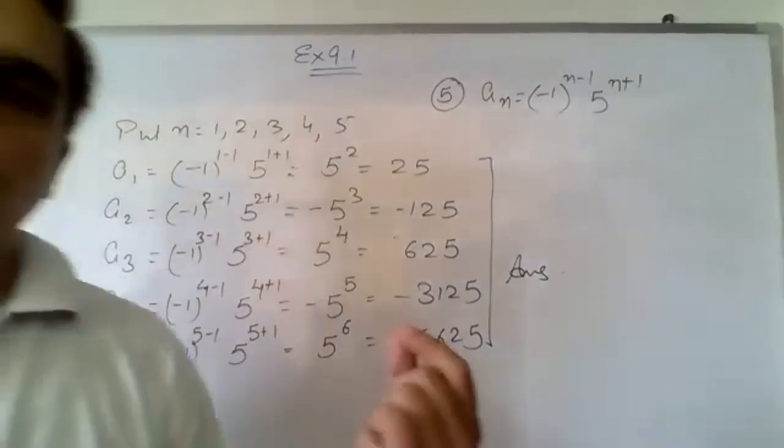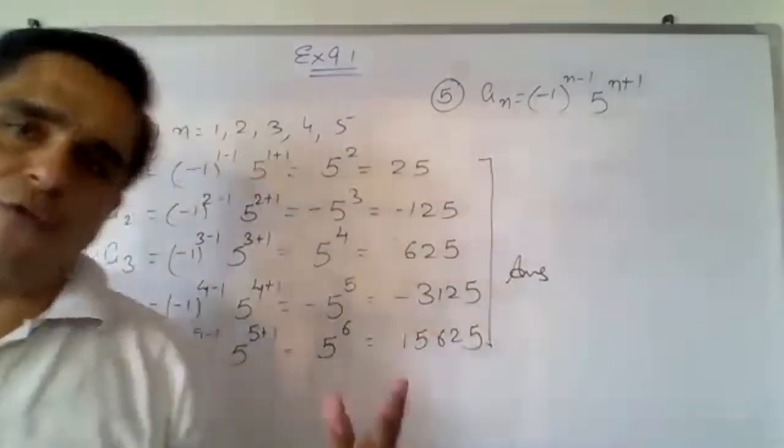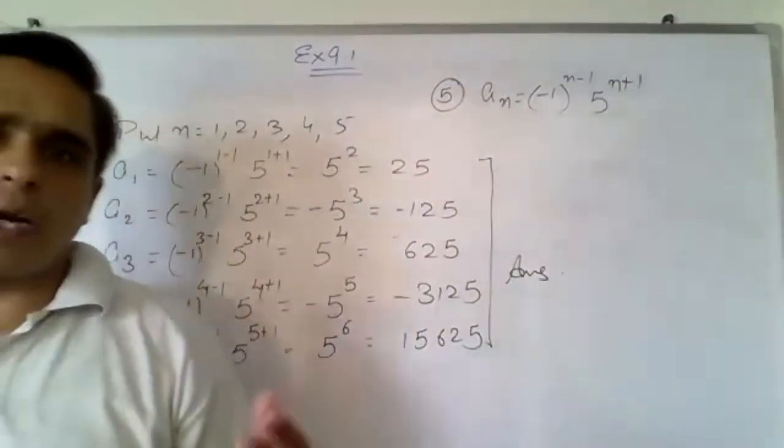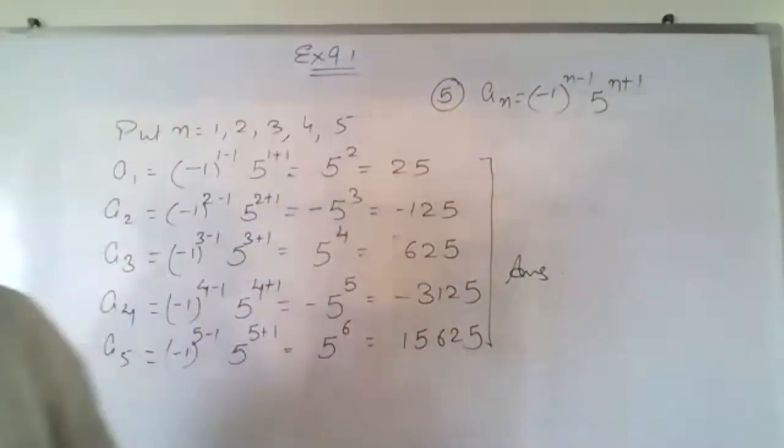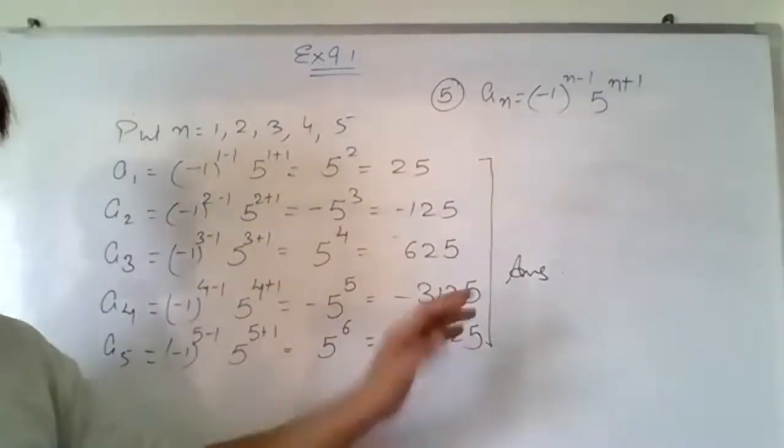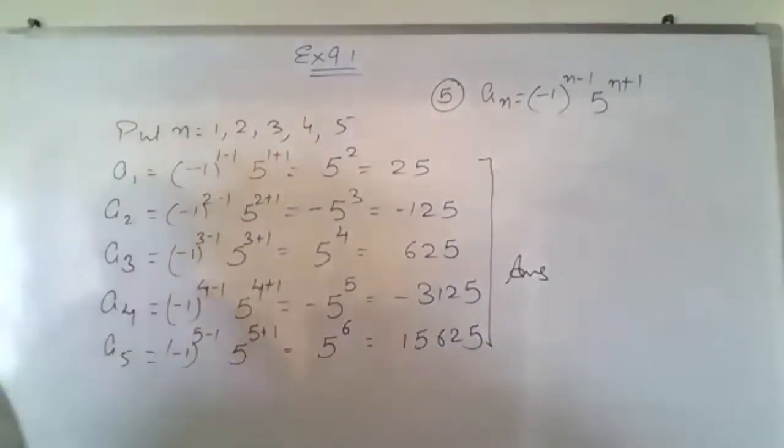So this will be your answer for this question. We just need to put n = 1, 2, 3, 4, 5 and then find out the different values for this sequence.